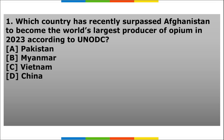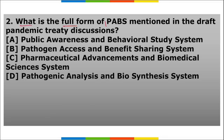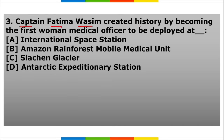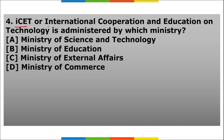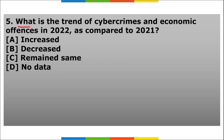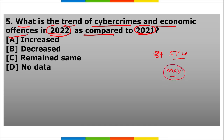Homework questions: 1) Which country recently surpassed Afghanistan to become the world's largest opium producer in 2023 per UNODC? Give the full form of UNODC. 2) What is the full form and significance of PABS in the Draft Pandemic Treaty? 3) Captain Fatima Wasim created history by becoming the first women medical officer deployed at Siachen. 4) Which ministry administers ICET (International Cooperation and Education on Technology)? 5) What is the trend of cyber crimes and economic offenses in 2022 compared to 2021?